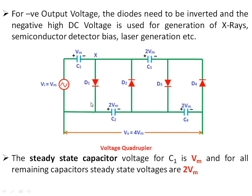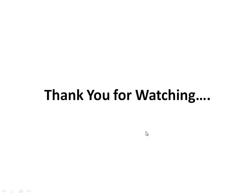This is the circuit that generates a negative high voltage, used in applications such as x-ray generation where a negative high voltage is required. Compared to the earlier configuration, the diodes are inverted, so we get a negative output voltage. Here you can see V_out equals minus 4Vm. This negative voltage is used in various applications.